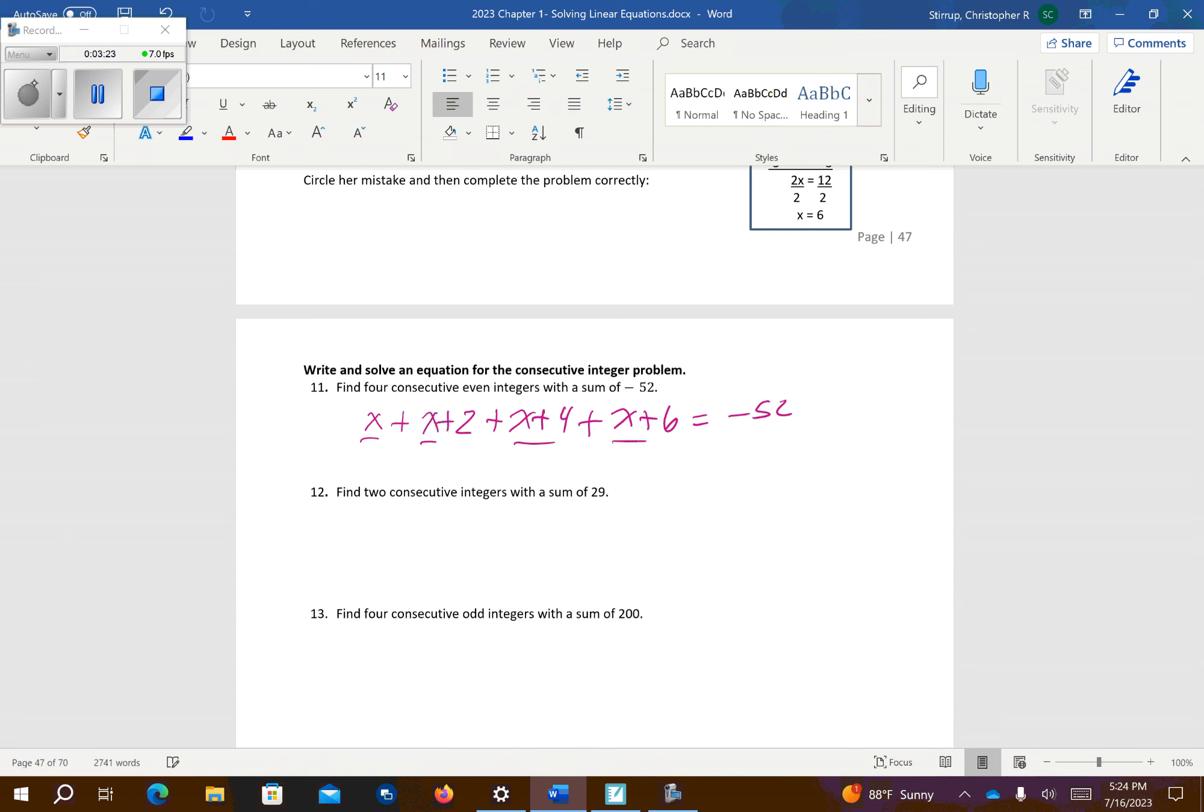So this is 1, 2, 3, there's our 4 numbers. So x, x, x, and x added together gives me 4x. 2 plus 4 is 6, plus another 6 is 12. Equals negative 52.